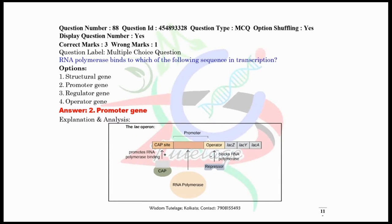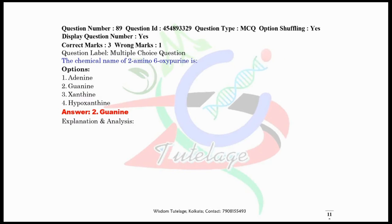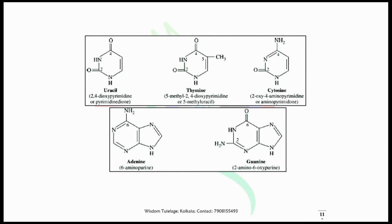Question number 88, RNA polymerase binds to which of the following sequence in transcription? Obviously RNA polymerase binds in the promoter region. That is a very easy question from any operon. Here I have given the example of the lac operon diagram. Now question number 89, the chemical name of 2-amino-6-oxypurine is guanine. You have to remember the other purine and pyrimidine bases, or the chemical names of these bases along with their structures. I have given here the entire explanation.